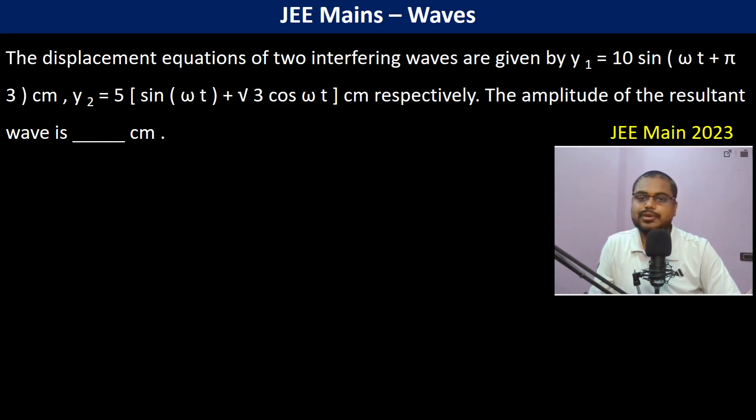The displacement equations of two interfering waves are given by y₁ and y₂ respectively. The amplitude of the resultant wave is... So here, there is one wave y₁ and there is one wave y₂.